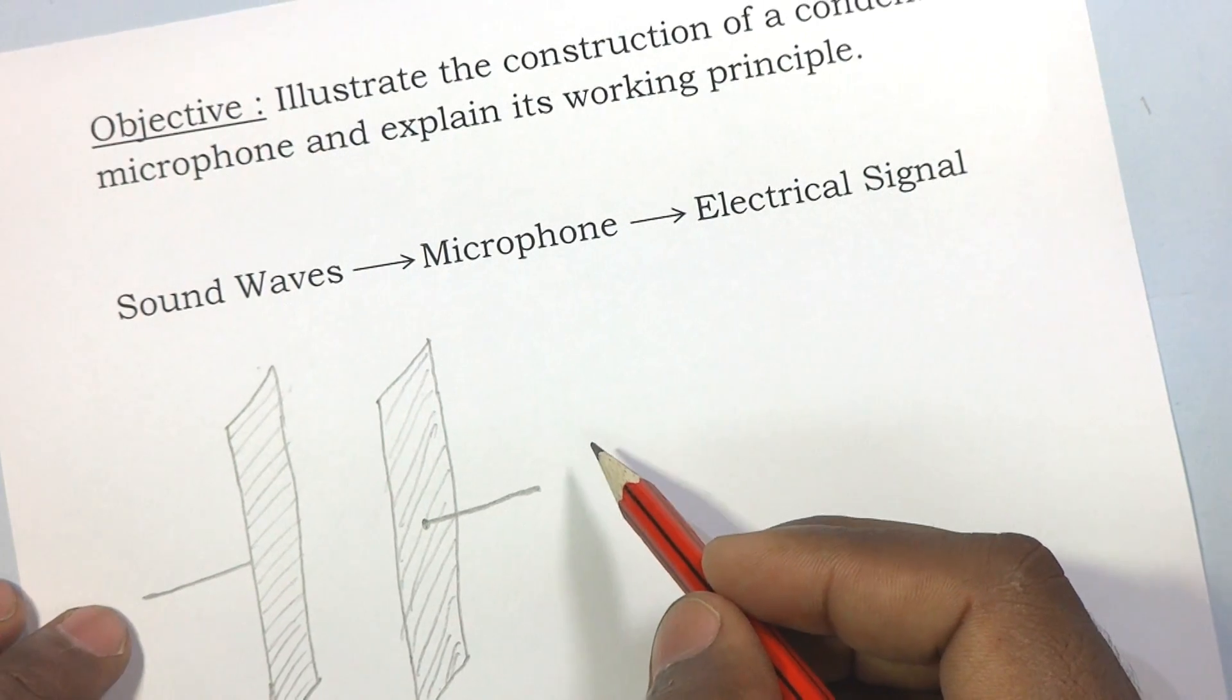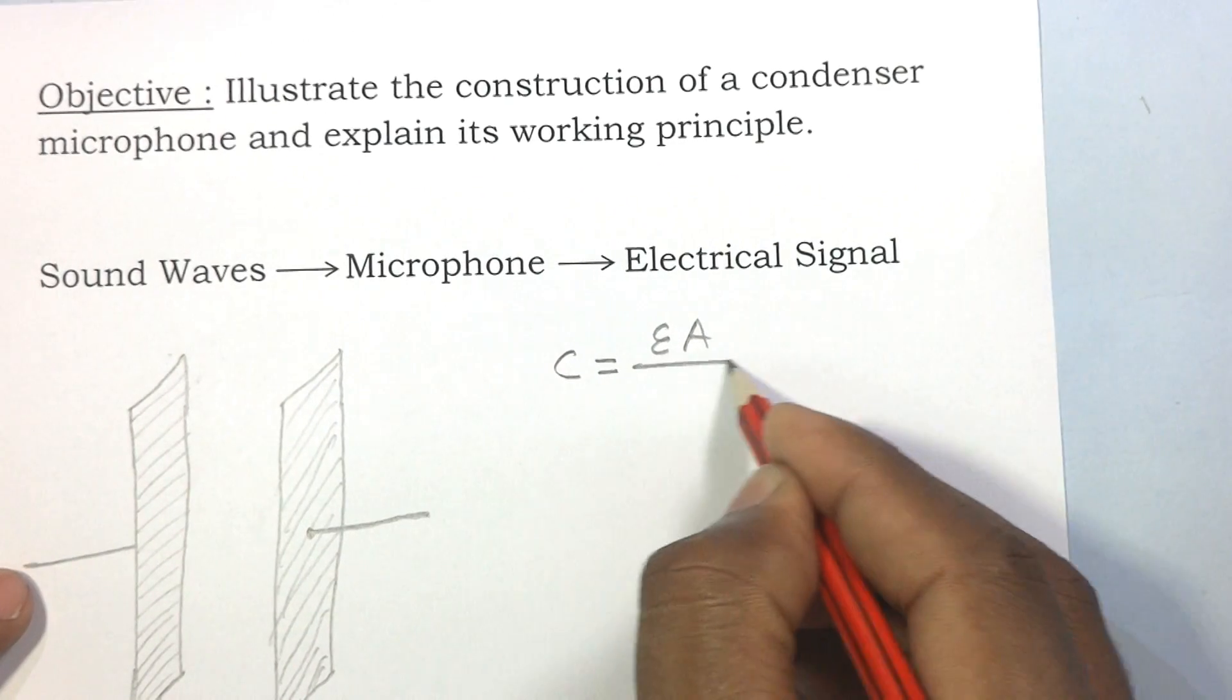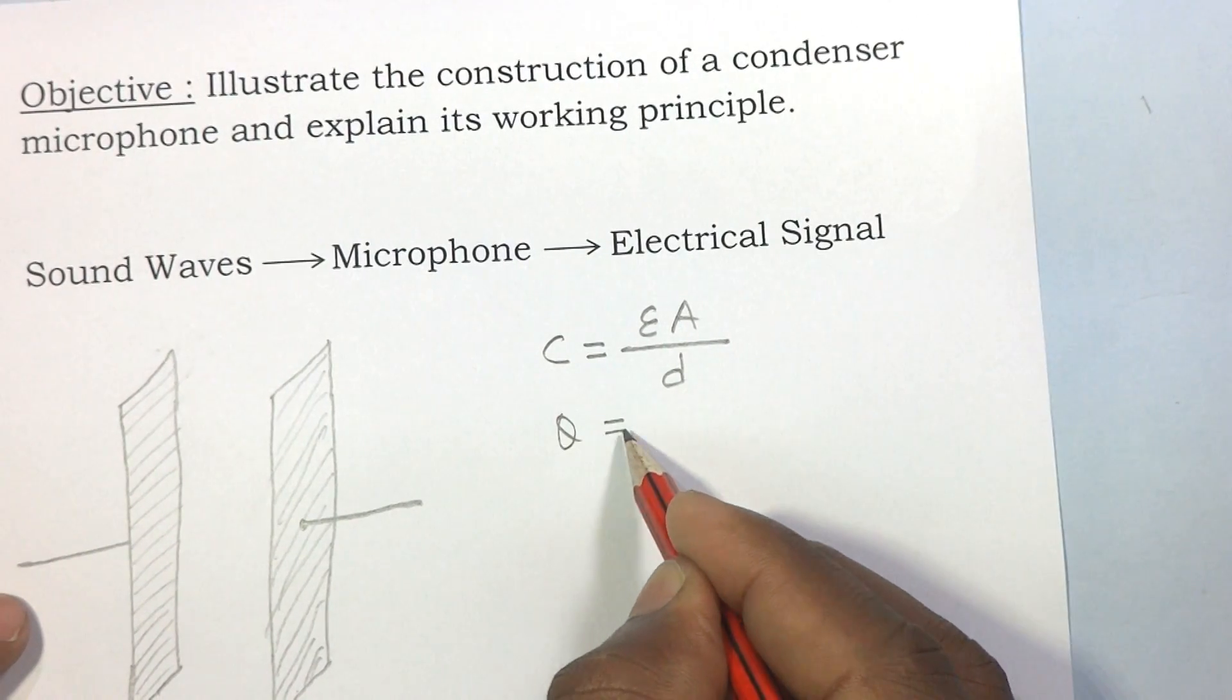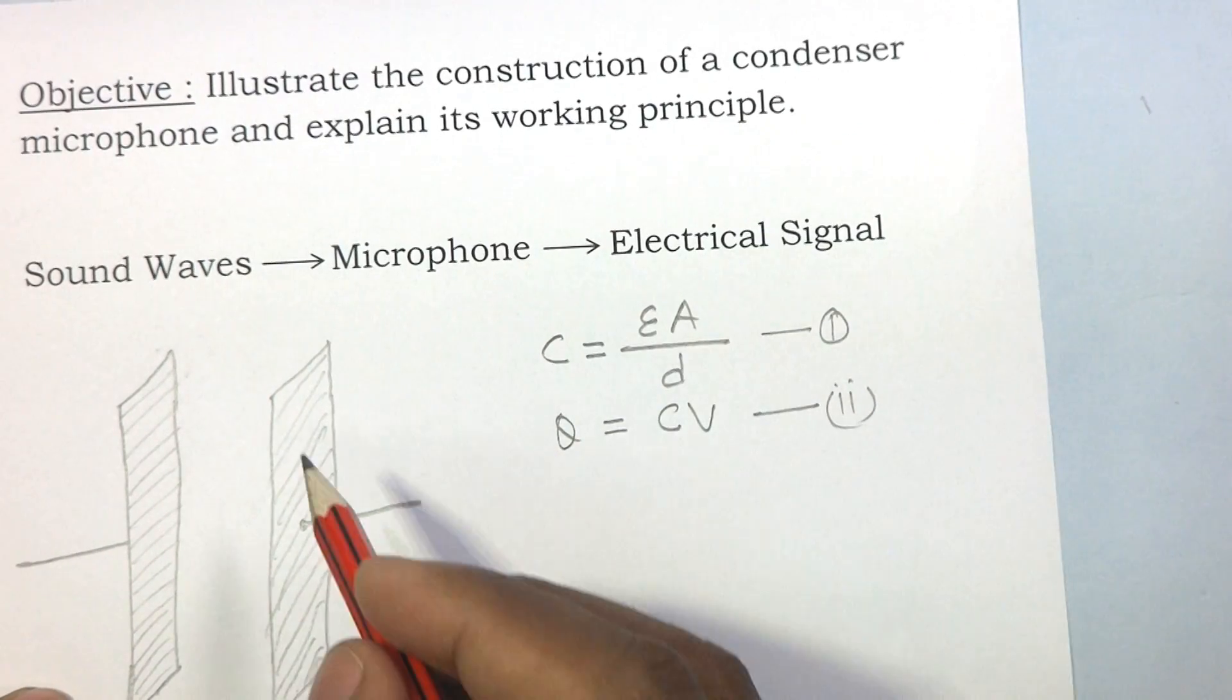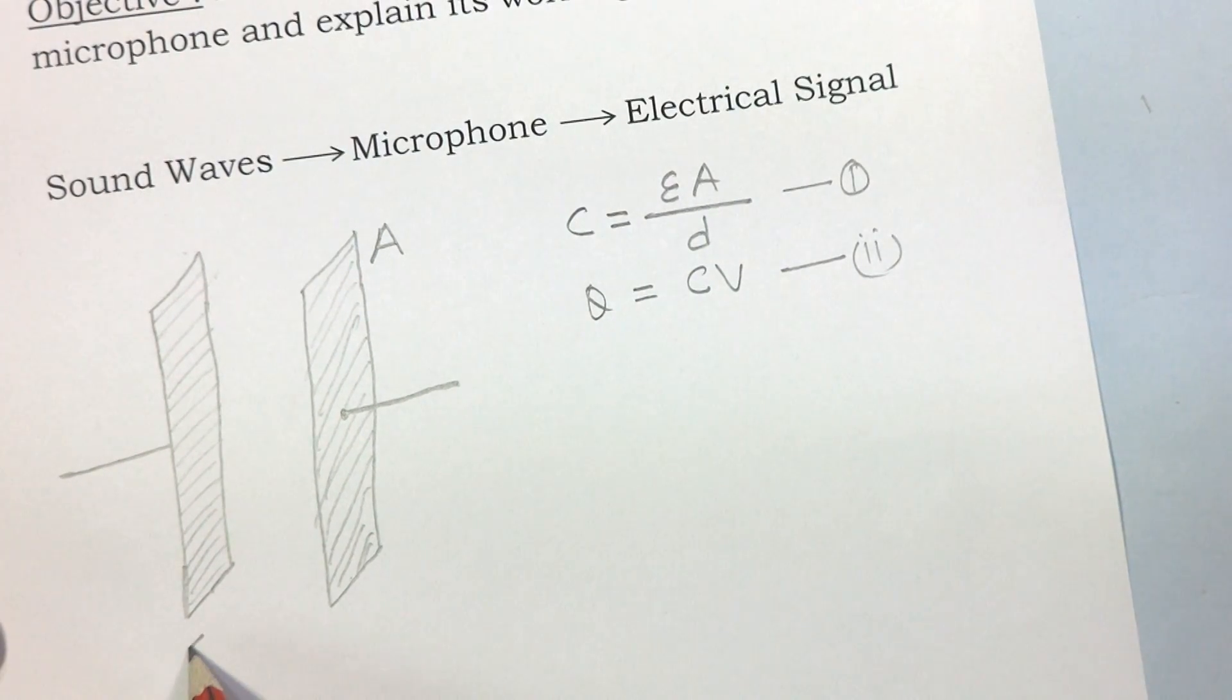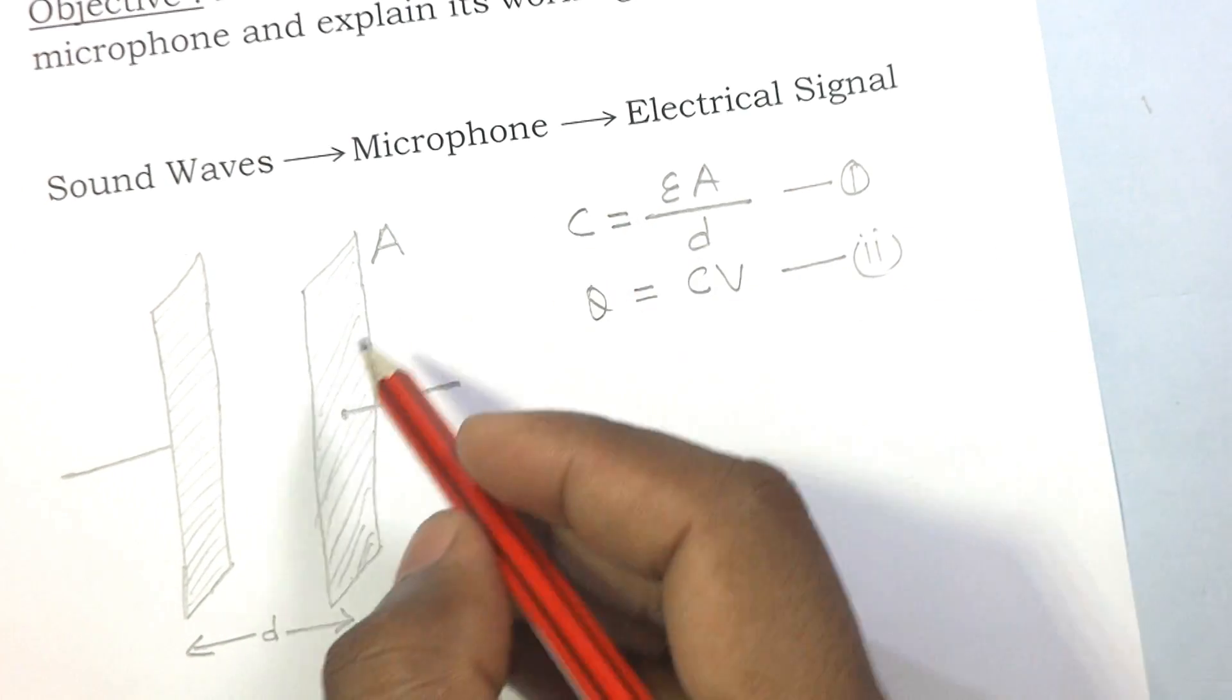As you know about these two formulas of a capacitor: C equals epsilon A by D, and Q equals CV. This is equation 1 and this is equation 2. In the first equation, A is the effective area of the plate, D is the distance between the two plates, and epsilon is the permittivity of material or dielectric constant.